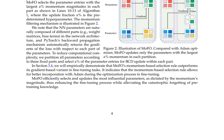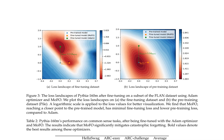MoFo partitions all parameters into fixed parts according to the network architecture and selects alpha percent of parameter entries for BCD update within each part. The authors formally introduce MoFo in Algorithm 1 and illustrate its mechanism in Figure 2. MoFo efficiently selects and updates the most influential parameters as dictated by the momentum's magnitude, enhancing the fine-tuning process while alleviating catastrophic forgetting of pre-training knowledge.